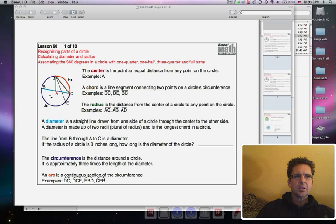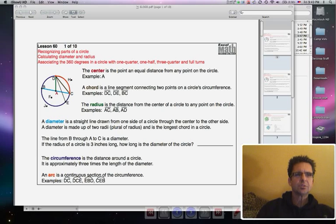Excel sixth grade lesson 60: recognizing parts of a circle, calculating diameter and radius, and associating the 360 degrees in a circle with one quarter, one half, three quarter and full turns. So here we go.